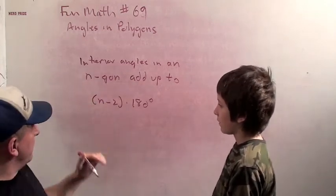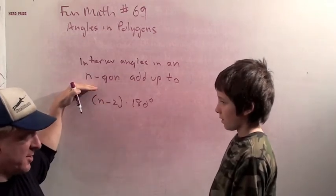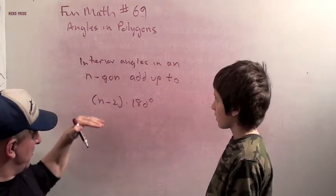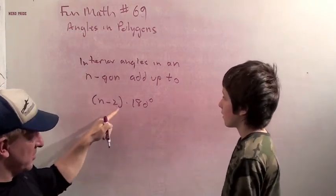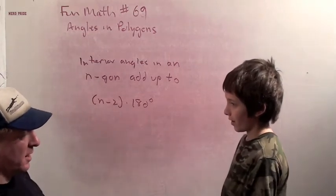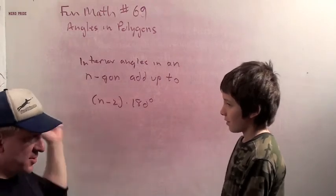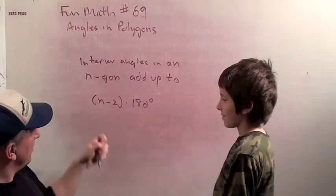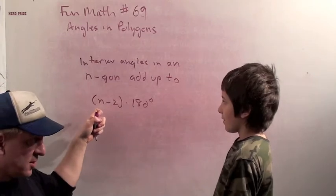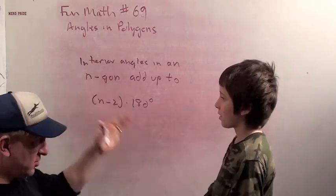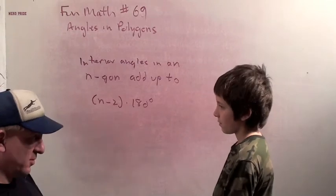So for a 3-gon, which is also known as a triangle, we get 3 minus 2 times 180, or 1 times 180, which is 180. For a 4-gon, which is also known as a quadrilateral, we get 4 minus 2, which is 2 times 180. And that's because we chopped it into 2 triangles. 4 minus 2 is 2, 2 triangles.